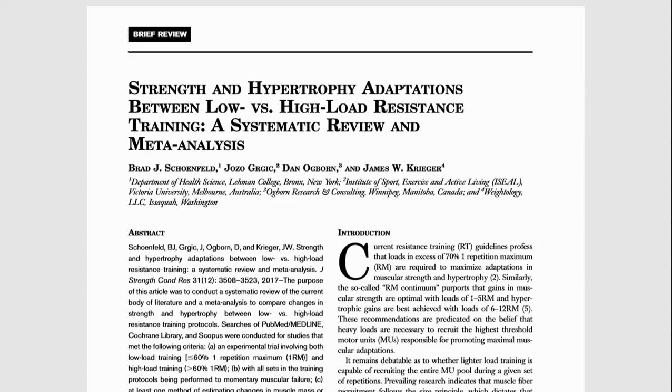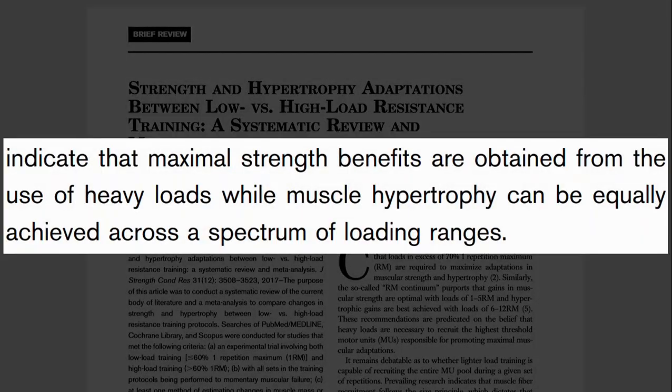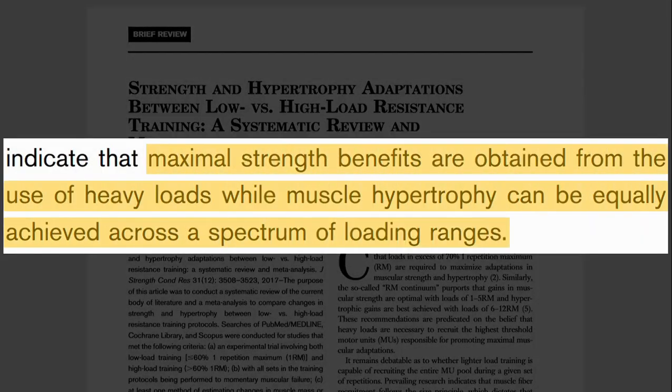The study found that although maximal strength gains were far superior when using heavier loads, using loads of less than 60% 1RM induced equal hypertrophy adaptations compared with loads of greater than 60% 1RM. An important factor to consider with this meta-analysis is that all the studies included compared training methods with all sets taken to failure for both the high and low load groups.